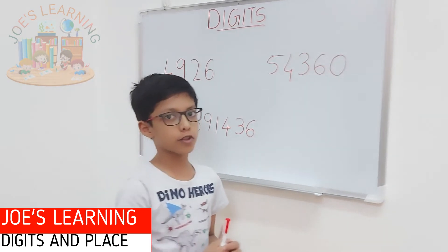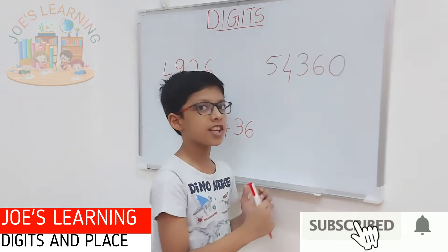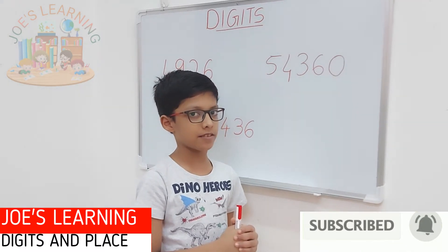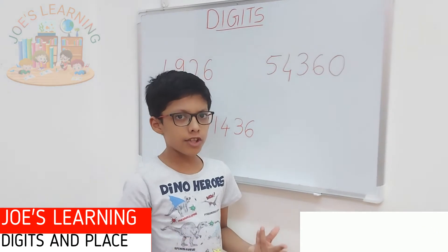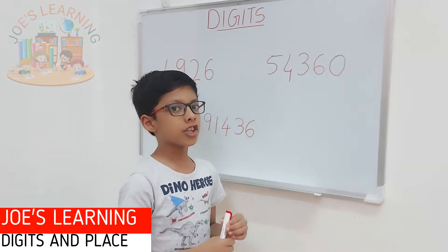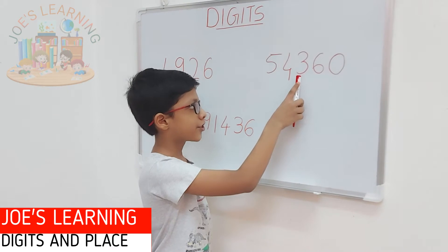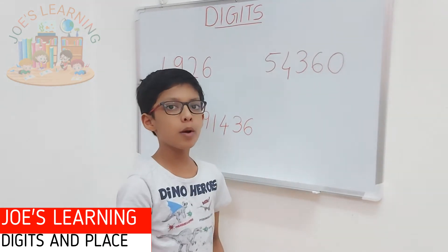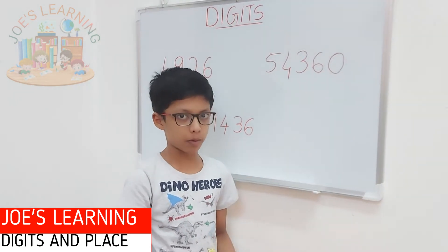Now let's move on to my other example, that is 54,360. What are the digits in this number? The digits are 5, 4, 3, 6, and 0, because they are the symbols used to write this number.